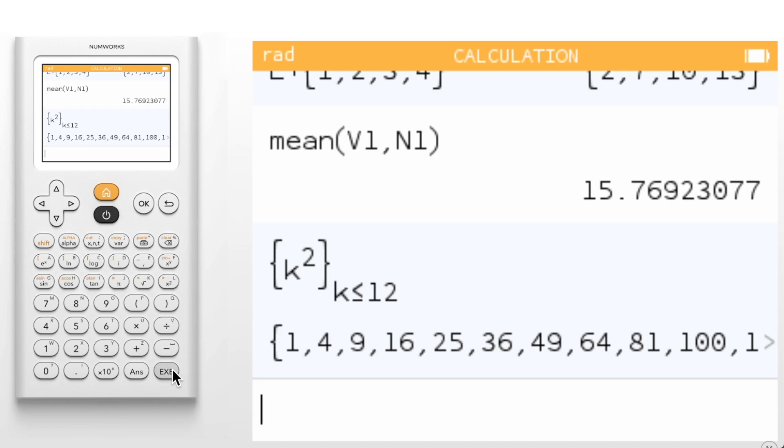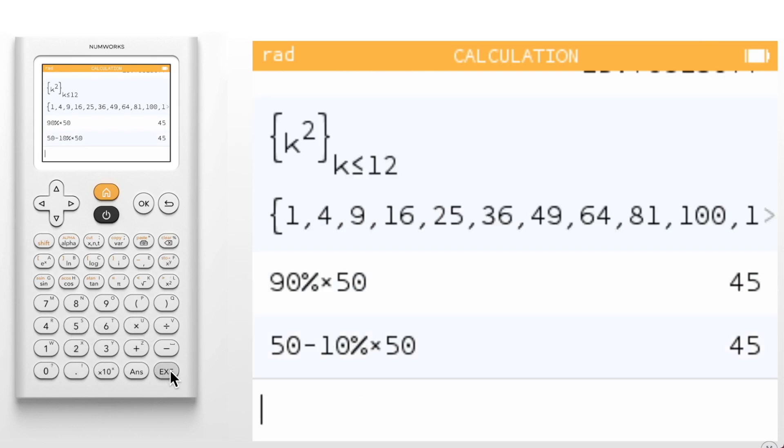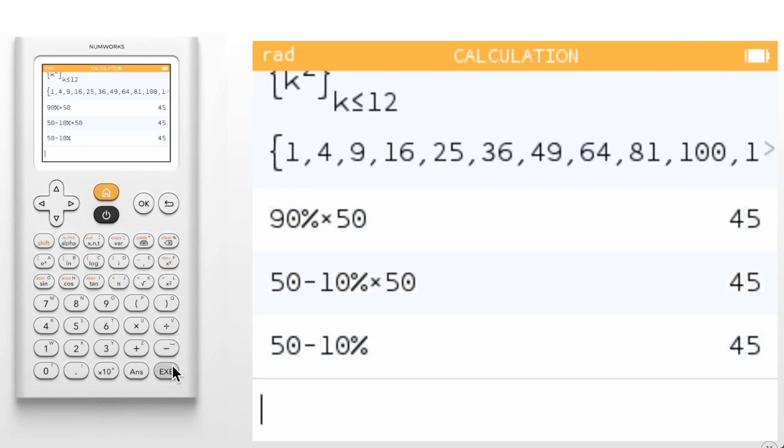There are just a few things left to mention about version 19. When performing calculations, you can now use the percent sign. Let's assume a $50 item was on sale for 10% off. We could compute this in three ways. First, we could compute 90% of 50. That percent sign is found as the alpha option of the backspace key. Or we could compute 50 minus 10% of 50. Finally, because the NumWorks calculator is intuitive, you can find that sale price by simply computing 50 minus 10%, which will assume 10% of 50.